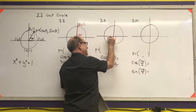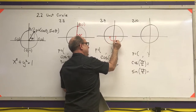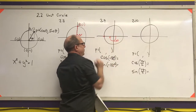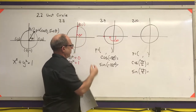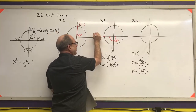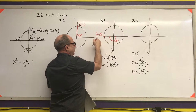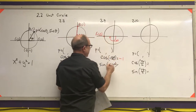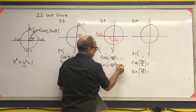Another example: negative 180 degrees. Start at the initial side and rotate clockwise. Identify the point on the unit circle and label its coordinates — that would be (-1, 0). So the cosine of -180 degrees is -1 and the sine is 0.